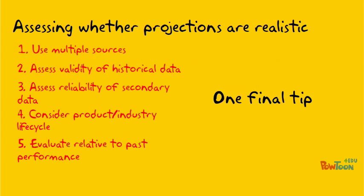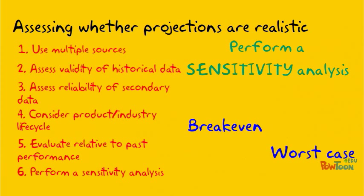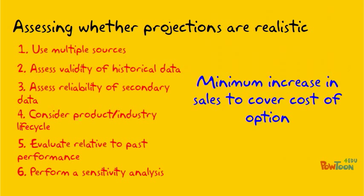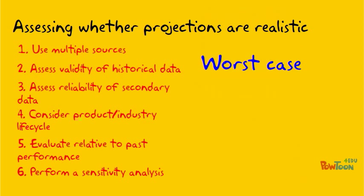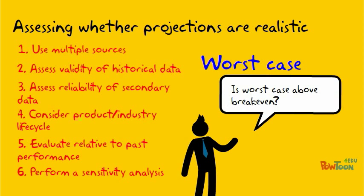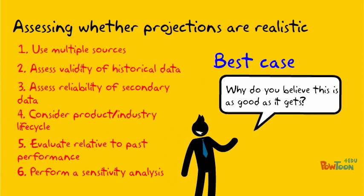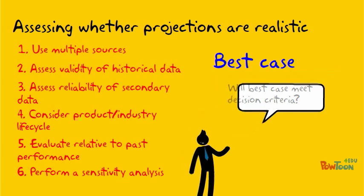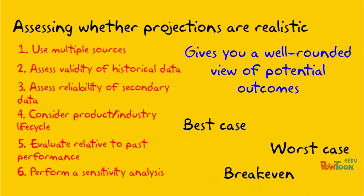Here is one final tip: when you're making projections, you should always calculate three outcomes — your break-even, your worst-case scenario, and your best-case scenario. Your break-even is the minimum increase in new sales you need to cover the costs of the option. Think about how realistic and likely the option is to exceed this break-even point. For your worst-case, think about why you believe that is the worst case — is it above your break-even, and will you meet your decision criteria? Then your best-case: justify why you think it's realistic, and will it meet your decision criteria? Understanding these three points gives you a well-rounded view of the potential outcomes of an option.